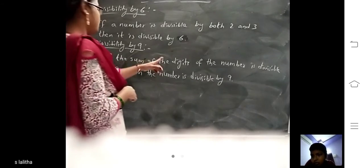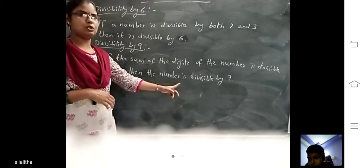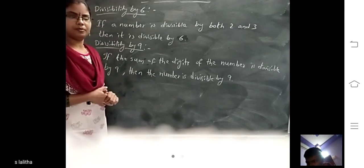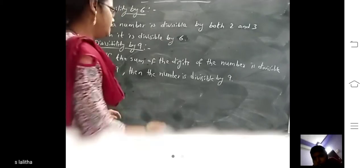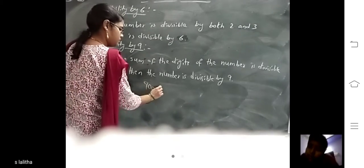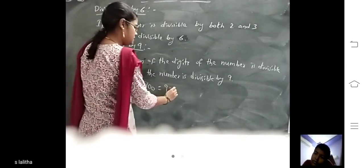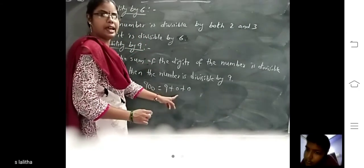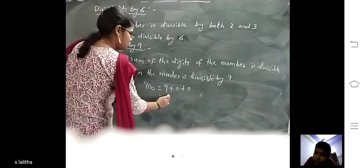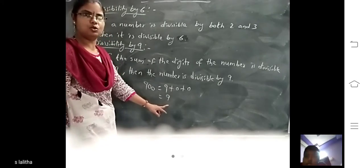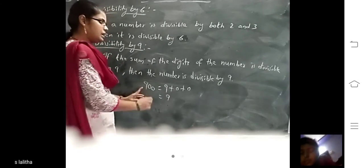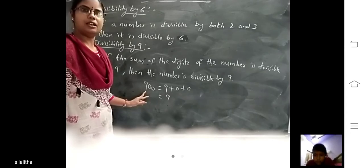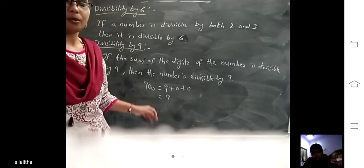The number is divisible by 9. Suppose we have 9 plus 0 plus 0, how much? 9 plus 0 is 9, 9 plus 0 is 9, so 9 is divisible by 9. So this time 900 also is divisible by 9. Can you understand children?